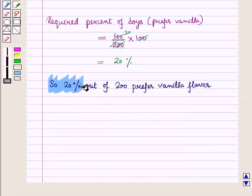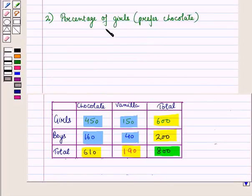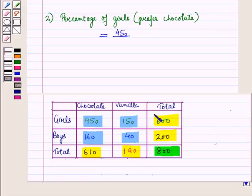So 20 percent out of 200 boys prefer vanilla flavor. Now in the second part we have to find the percent of girls who prefer chocolate flavor. The required percentage is the number of girls who prefer chocolate flavor, that is 450, upon the total number of girls, that is 600, into 100. This is equal to 75 percent.